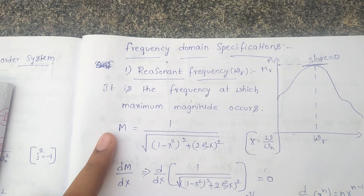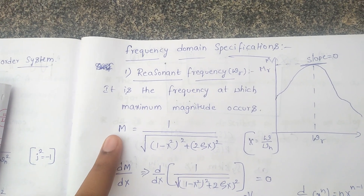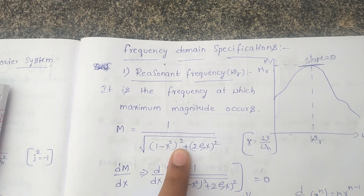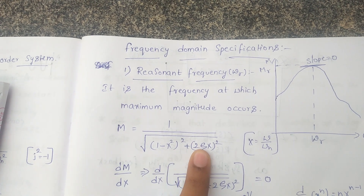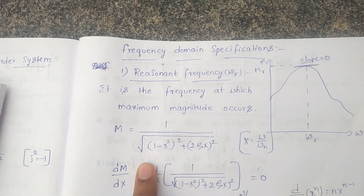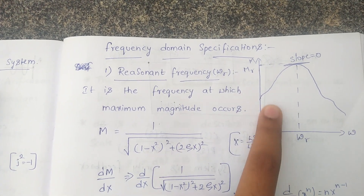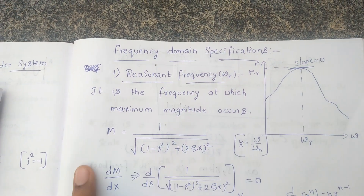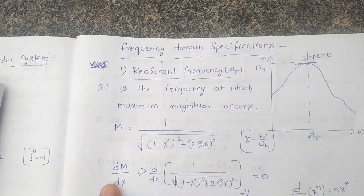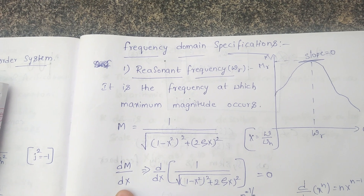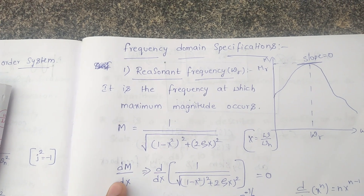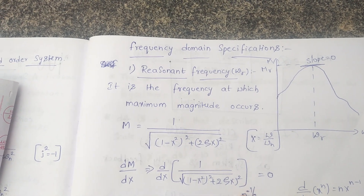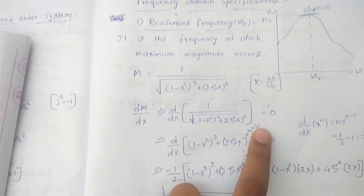We derived the equation for magnitude: M = 1 / √((1 − h²)² + (2ζh)²). For maximum magnitude, the slope equals zero. So we want to differentiate the magnitude with respect to h, get the slope, and equate it to zero.